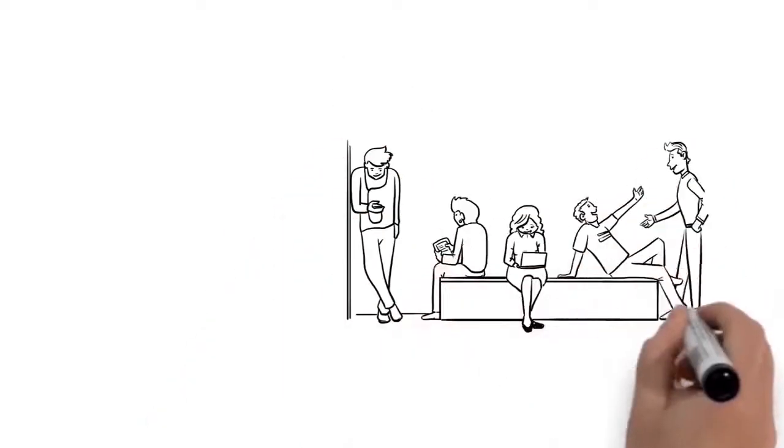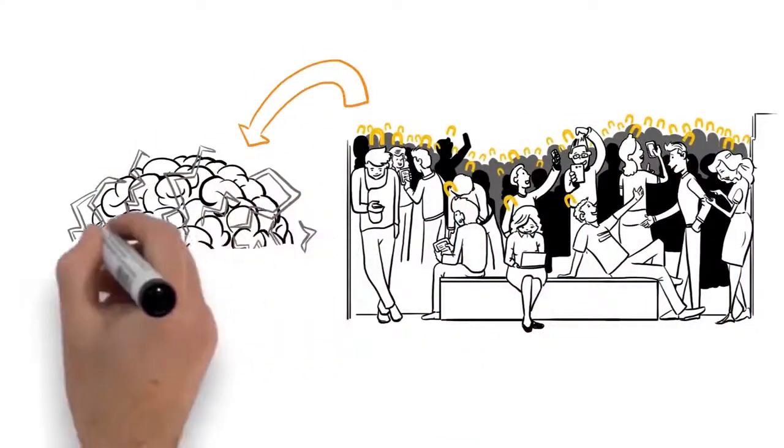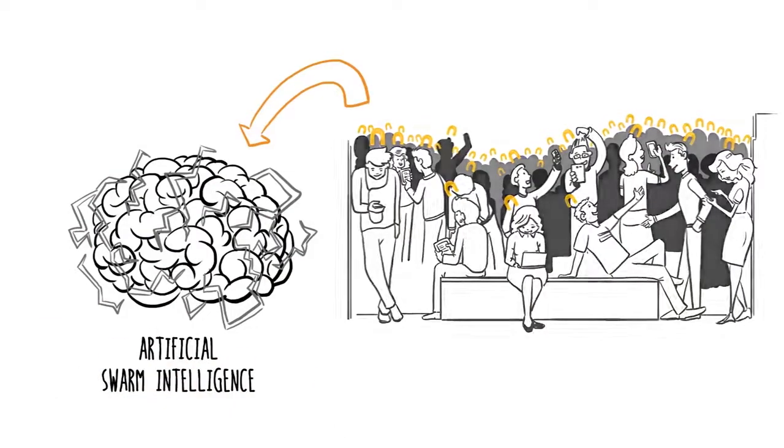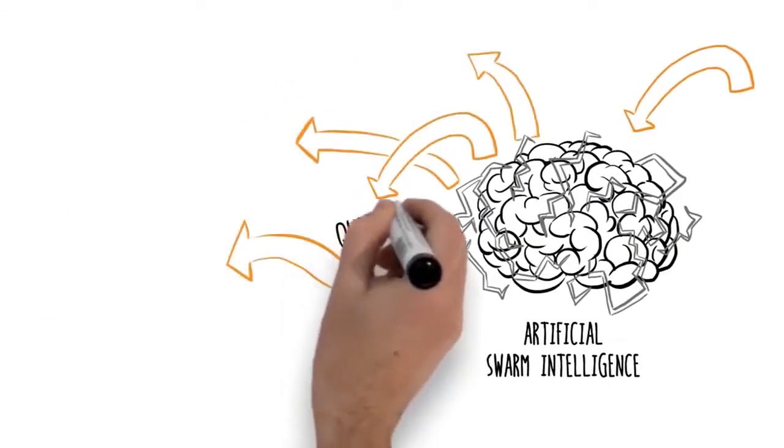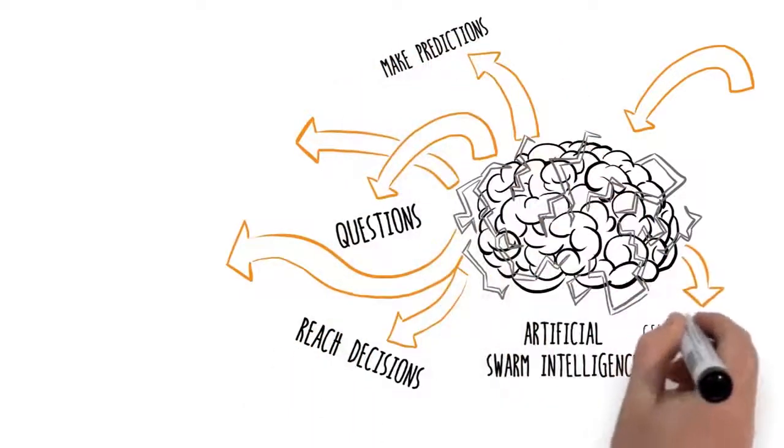Researchers at Unanimous AI have developed an innovative technology to allow any online group to form an artificial swarm intelligence that can quickly and accurately answer questions, reach decisions, make predictions, and generate forecasts.